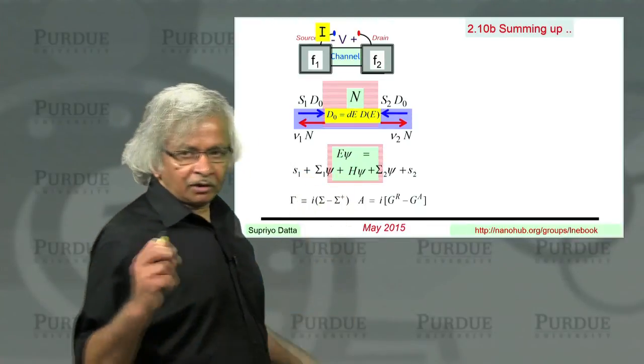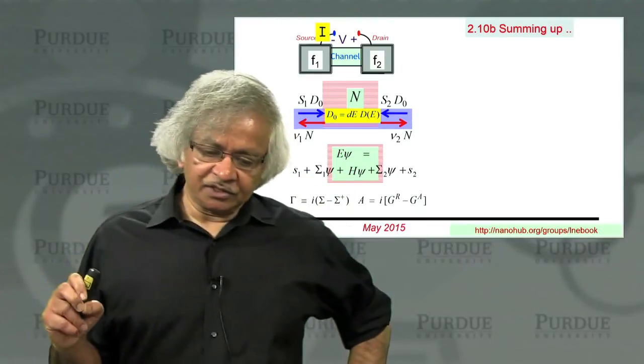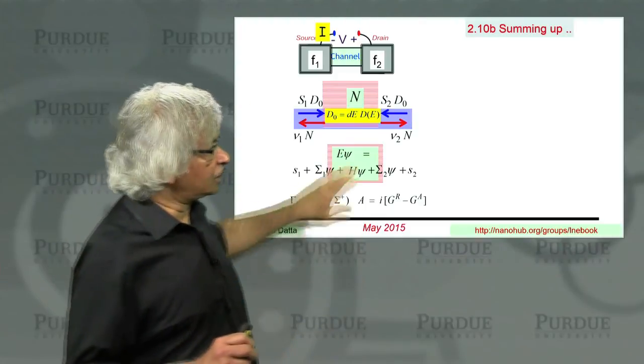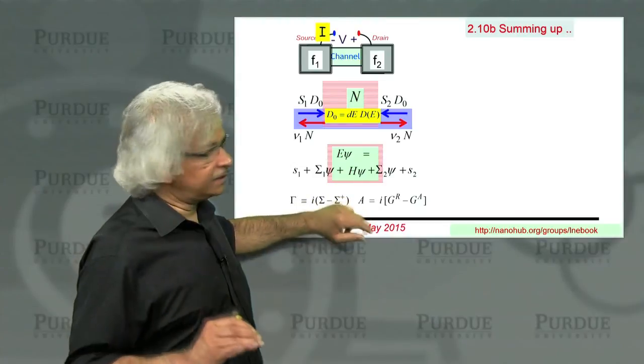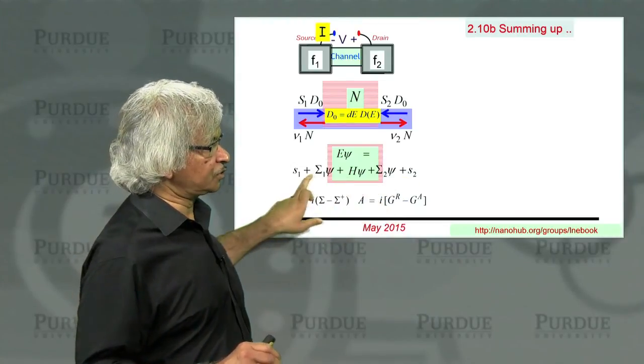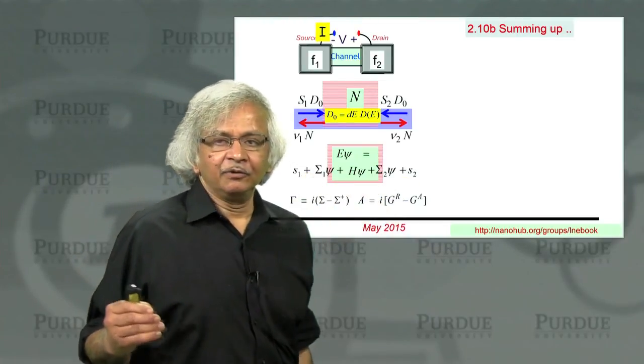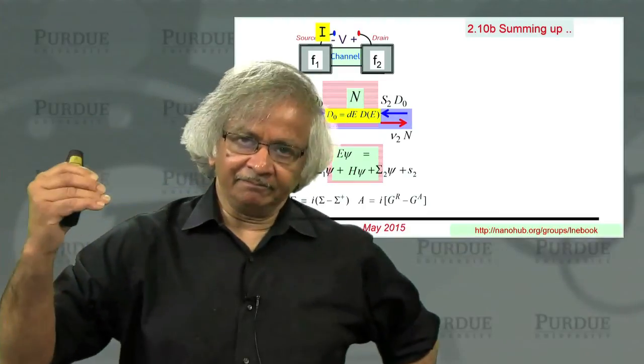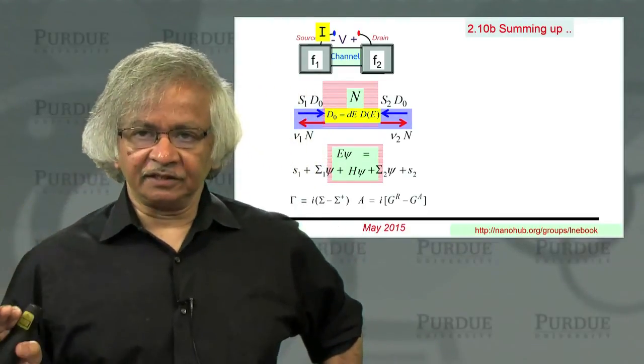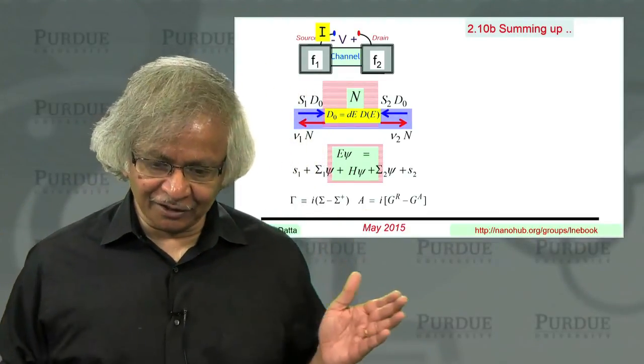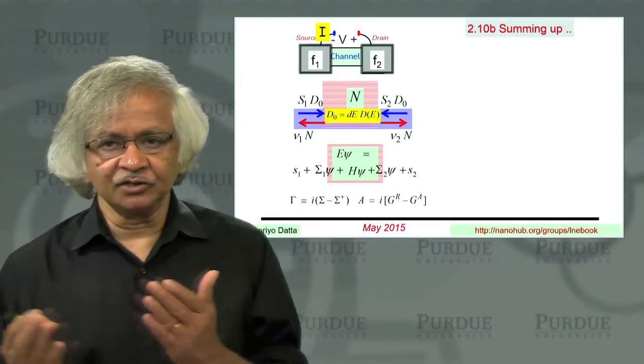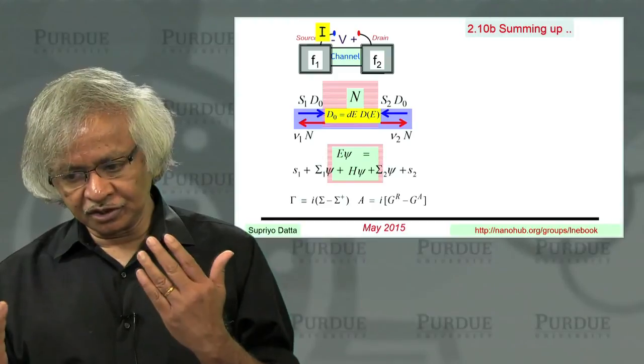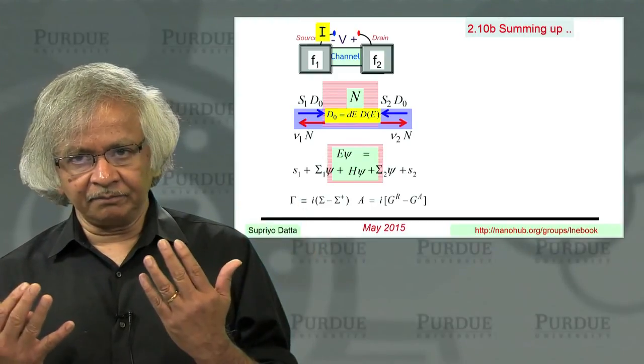One important point I tried to make at the outset is that at the Schrodinger equation level, it is not quite right to add multiple sources. Because if you do that, you'll get interference between them, which is unphysical.